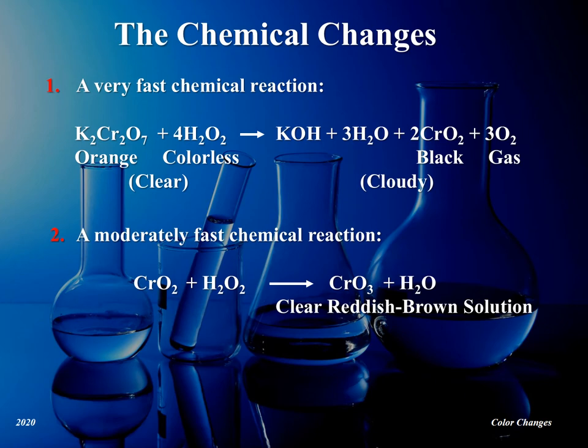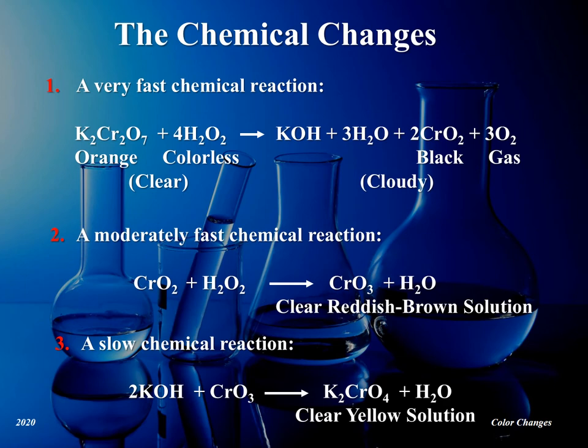In the final, very slow step shown in the equation, the chromic oxide reacts with the potassium hydroxide (KOH) formed in step 1 to give potassium chromate, with the formula K2CrO4. Potassium chromate has a bright yellow color.